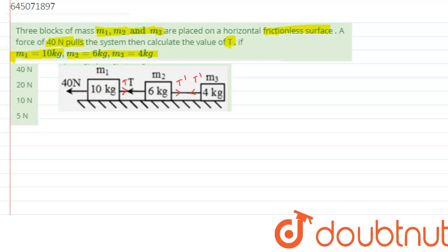One more thing we have to understand over here: Since the blocks are placed on a frictionless surface and it has been pulled with a 40 Newton force, all the blocks will be having the same acceleration a. All right, so all the blocks will accelerate towards left with same acceleration a.